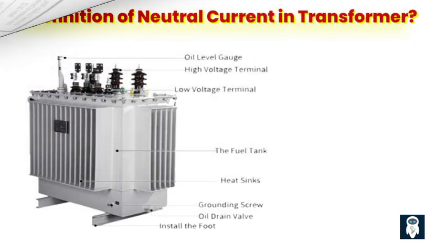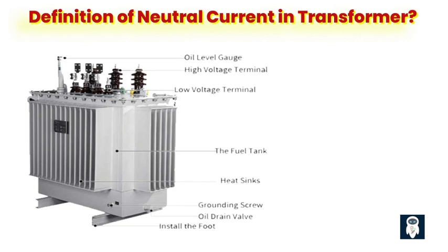What are neutral current transformers? Neutral current can be defined as the current that exists in a three-phase electrical system where the loads are imbalanced or the loads themselves generate harmonics. It usually occurs when the currents in the three phases are not equal or when there is a presence of zero-sequence currents in the system.